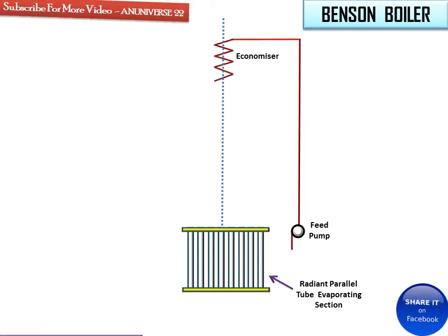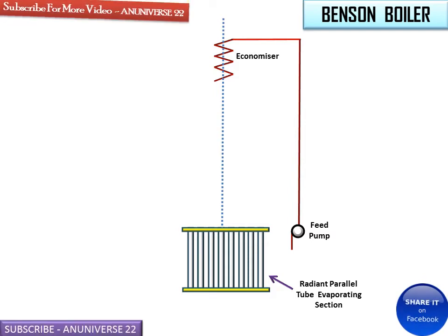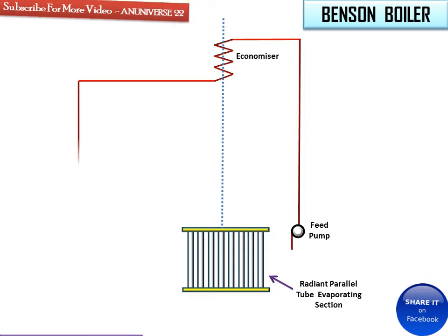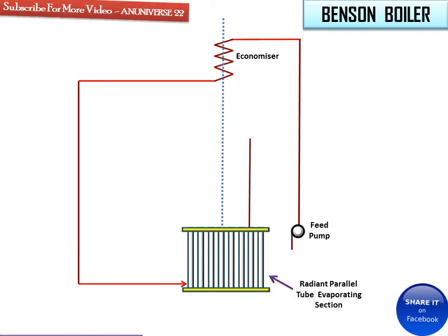This is the economizer. Water from the feed pump enters into the tube which first passes through the economizer, which uses combustion gases to preheat the water, and which also increases the efficiency of the boiler. From the economizer, this hot water is supplied to the radiant tube evaporating section, where the majority of the water is converted into steam.